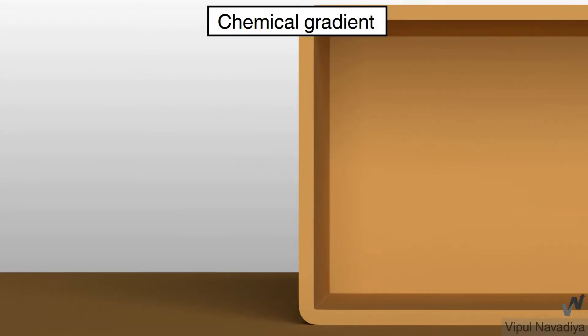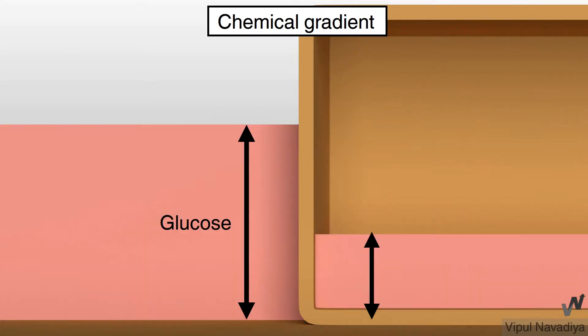Chemical gradient means difference in concentration. Composition of intracellular fluid is quite different from extracellular fluid. So, different constituents have different concentration on either side of the membrane. Let's take an example, where glucose concentration is higher outside than inside. This concentration gradient favors diffusion of glucose from outside to inside. For non-charged molecules like glucose, only concentration gradient drives the movement.